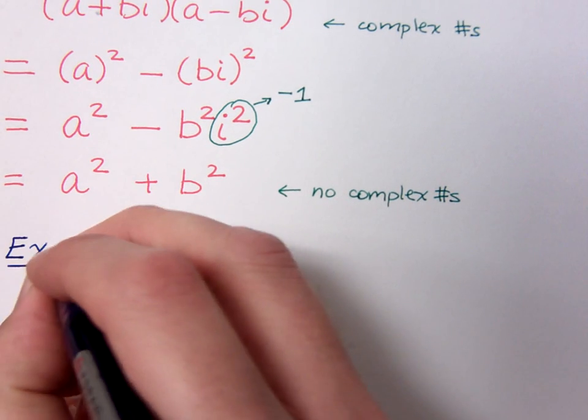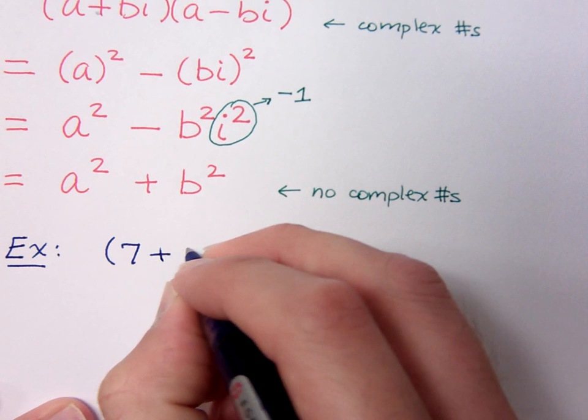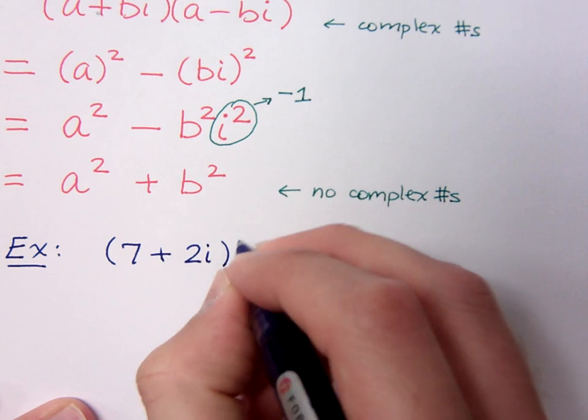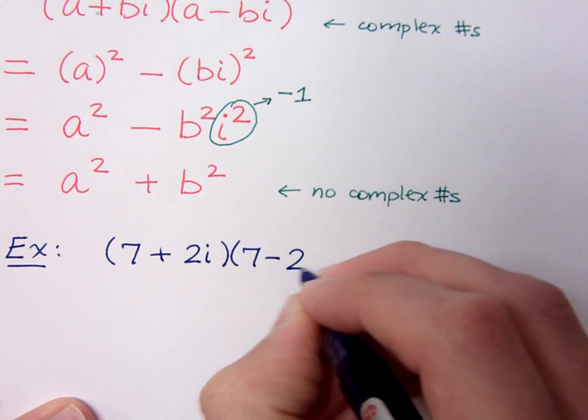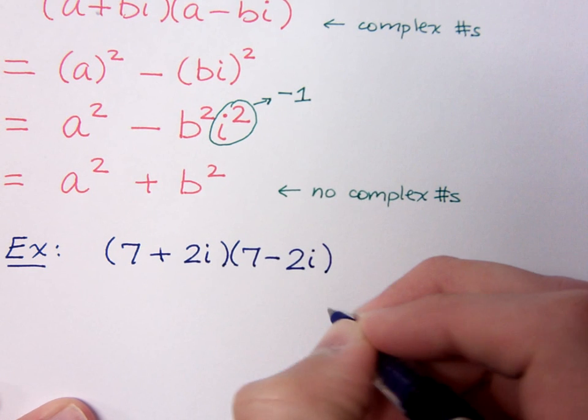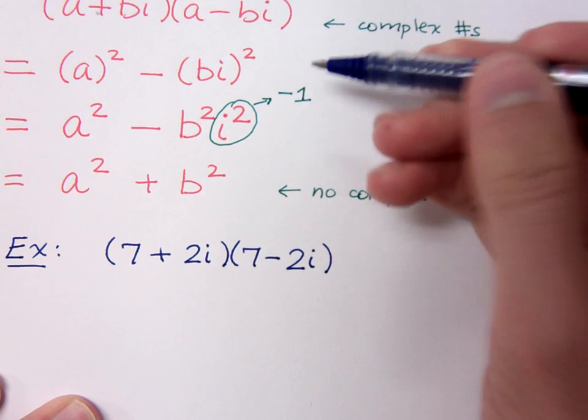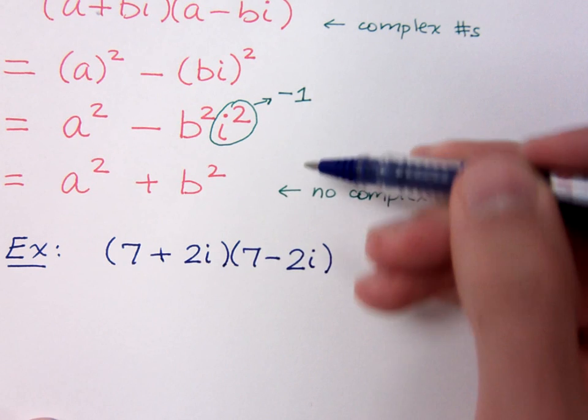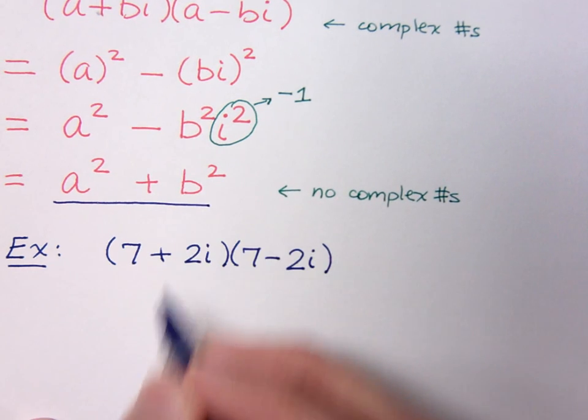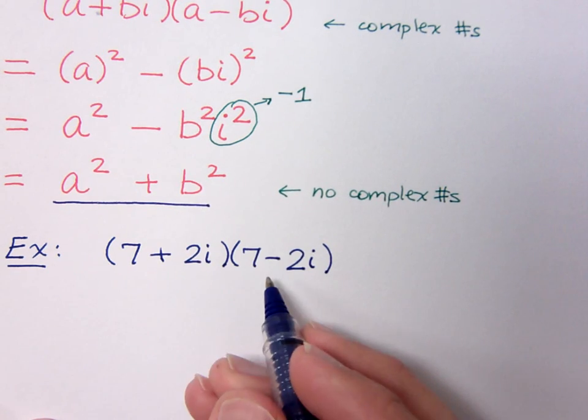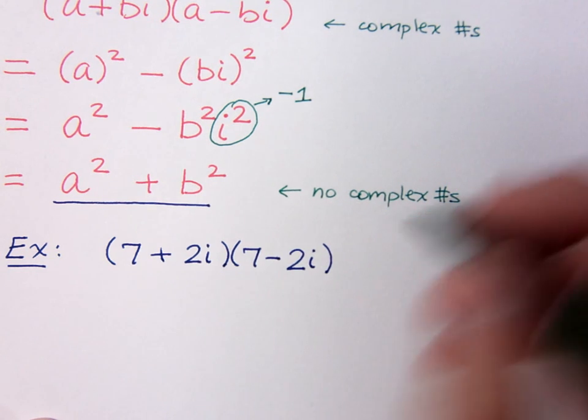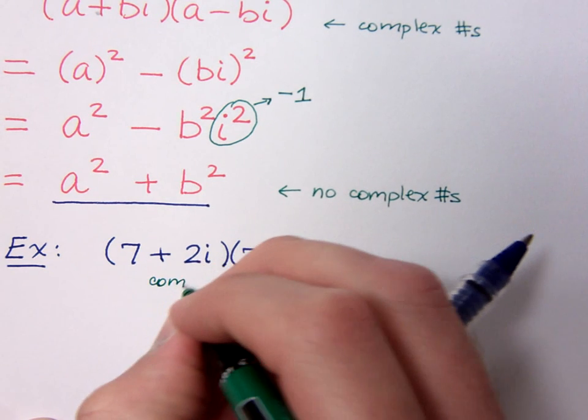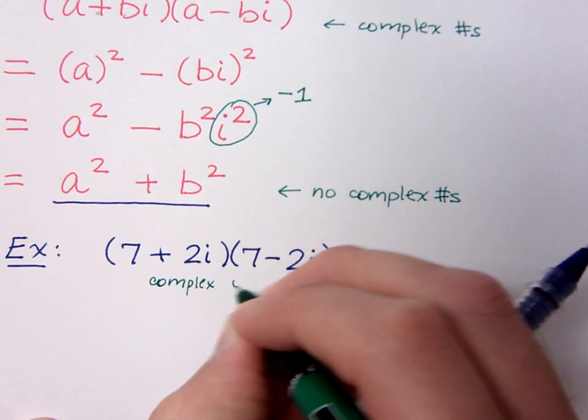Suppose, for example, we have 7 plus 2i times 7 minus 2i. We don't need to go through all of this to get the product. We just need to know the end result of that special product. These guys are complex conjugates.